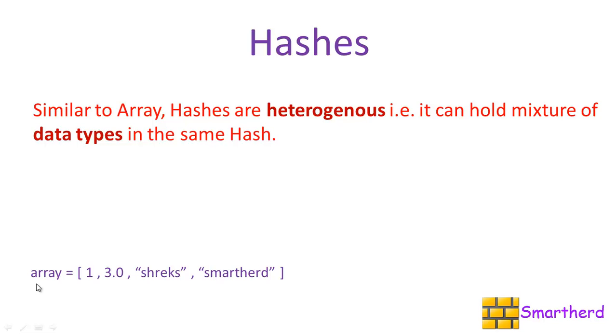This is an array: 1, 3.0, Shakes, SmartHerd. FixNum which is the integer, then float value, then string. In arrays we have our index like this: 0, 1, 2, 3, then minus 1, minus 2, minus 3, minus 4. If you remember, this is the negative index of the array.